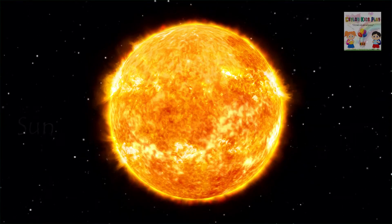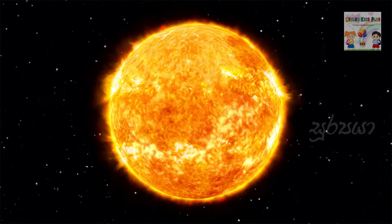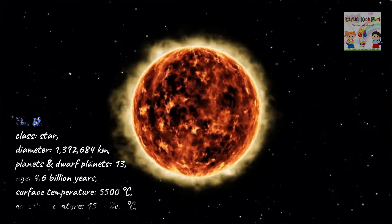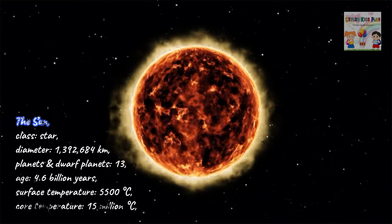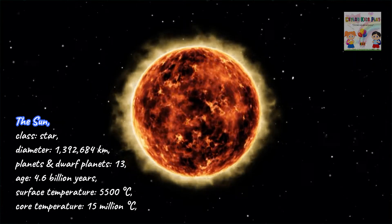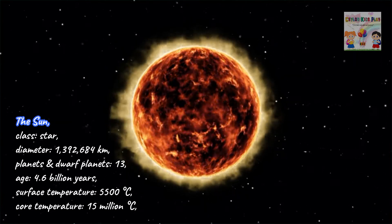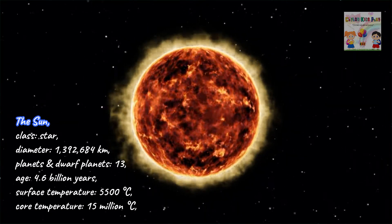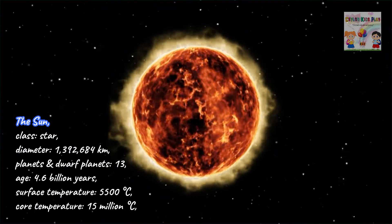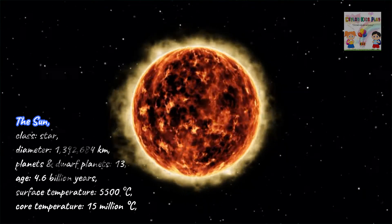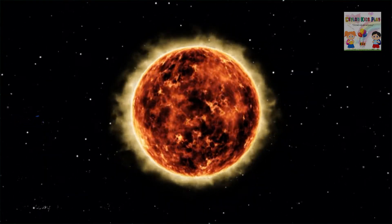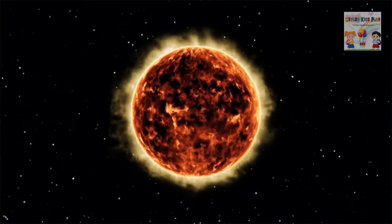Sun. The Sun, class: star. Diameter: 1,392,684 km. Planets and dwarf planets: 13. Age: 4.6 billion years. Surface temperature: 5,500 degrees Celsius. Core temperature: 15,000,000 degrees Celsius.